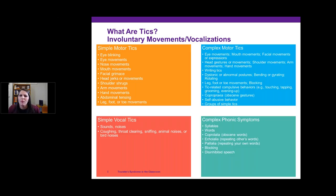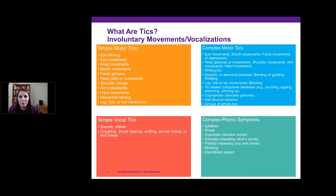Tics themselves are involuntary movements and vocalizations. We separate them into four different categories: simple tics versus complex tics, and motor tics versus vocal tics. Simple tics are short, one tic at a time — different eye movements, nose movements — whereas complex motor tics are multiple tics strung together. For vocal tics, simple ones are sounds, noises, coughing, throat clearing, while complex phonics symptoms involve words, syllables, and sentences put together. Again, these are involuntary and the child has no control over them.